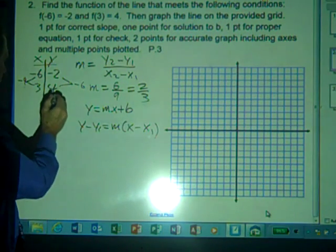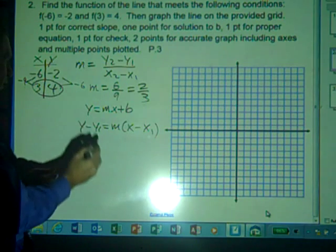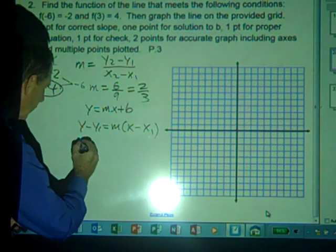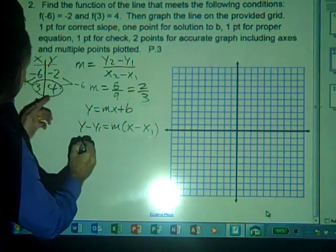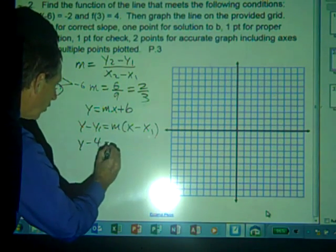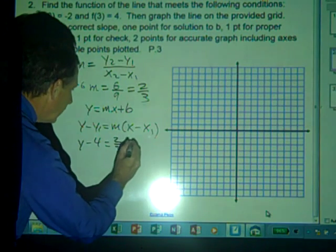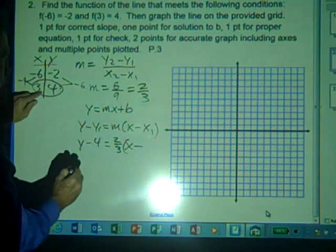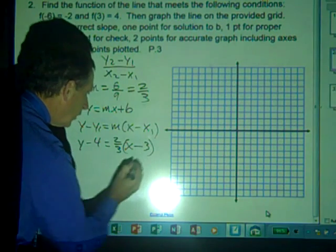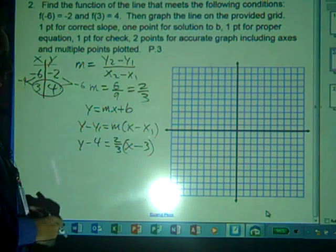We're going to use this second point here just because it's closer. So we take y minus y1, which is 4, equals m, and m we calculated to be 2 thirds, times quantity x minus x1, which is 3. There we have an equation of a line.